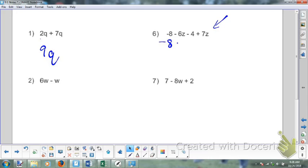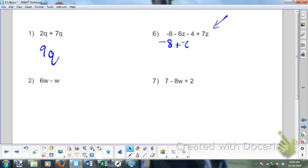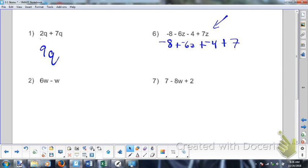Negative eight plus negative six Z. Plus instead of minus positive four, plus negative four. And then at the end I already had a plus sign so it's just plus seven Z. Now I am looking to collect my like terms. Have the exact same variables. This one and this one do.